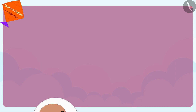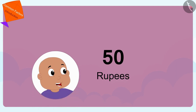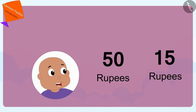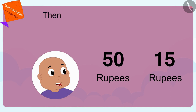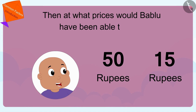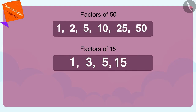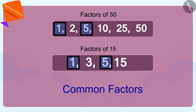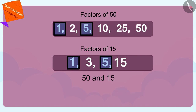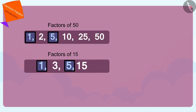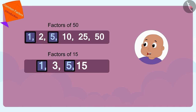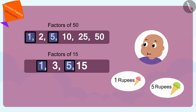If Babloo had 50 and 15 rupees, then at what prices would Babloo have been able to buy? If you want, you can pause the video and find the answer. 1 and 5 are the common factors of 50 and 15. So Babloo would have been able to buy ice creams for 1 or 5 rupees.